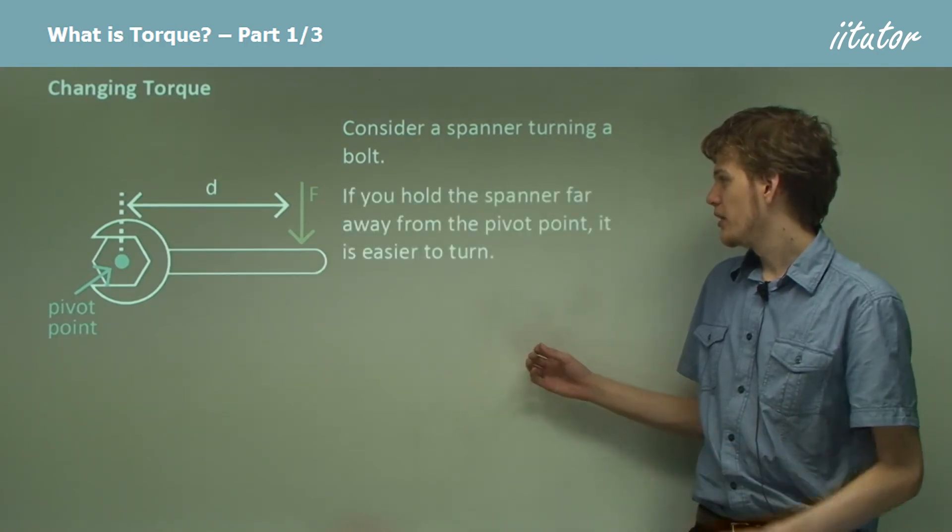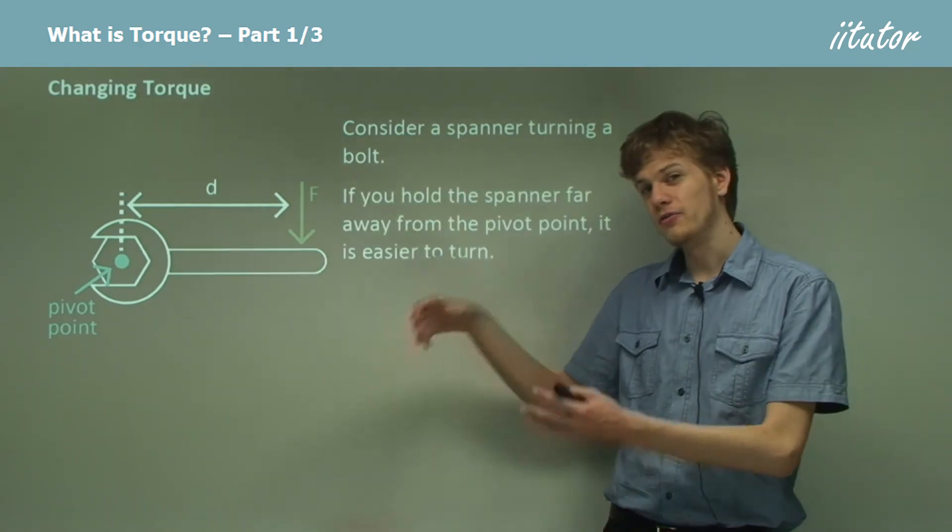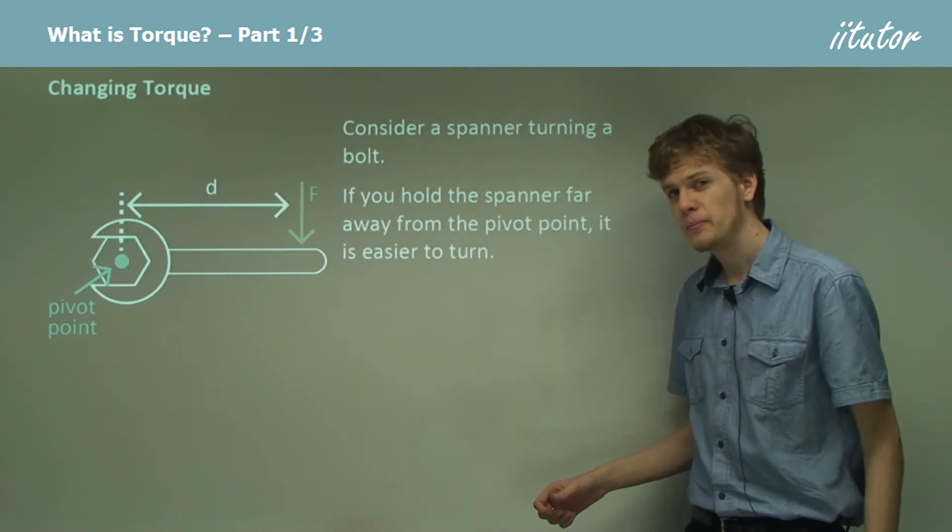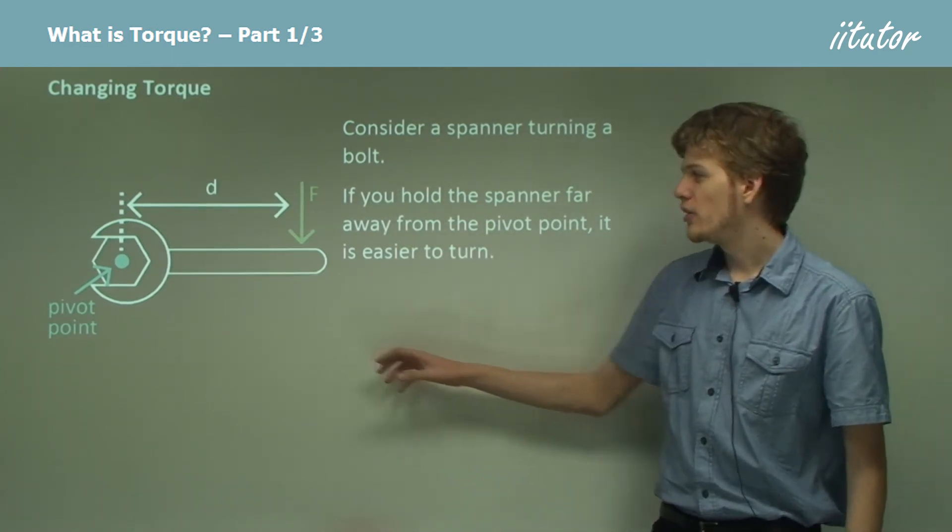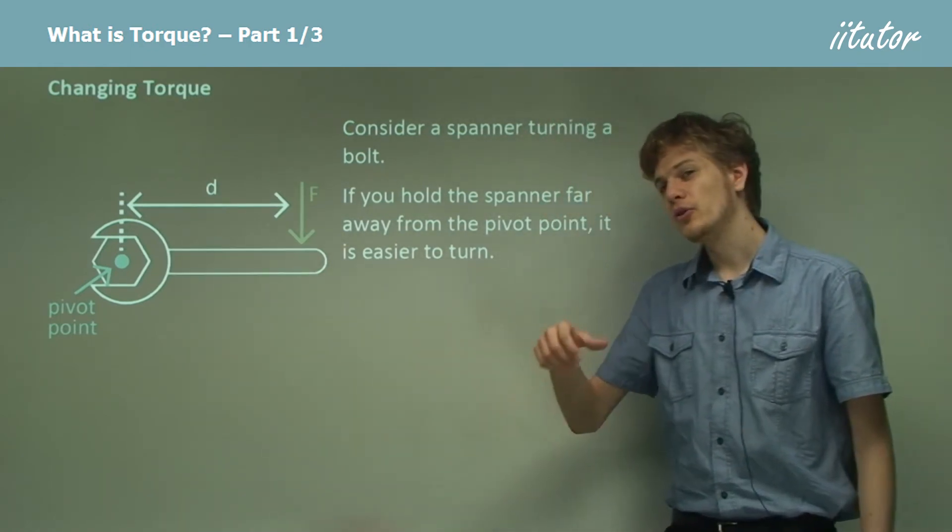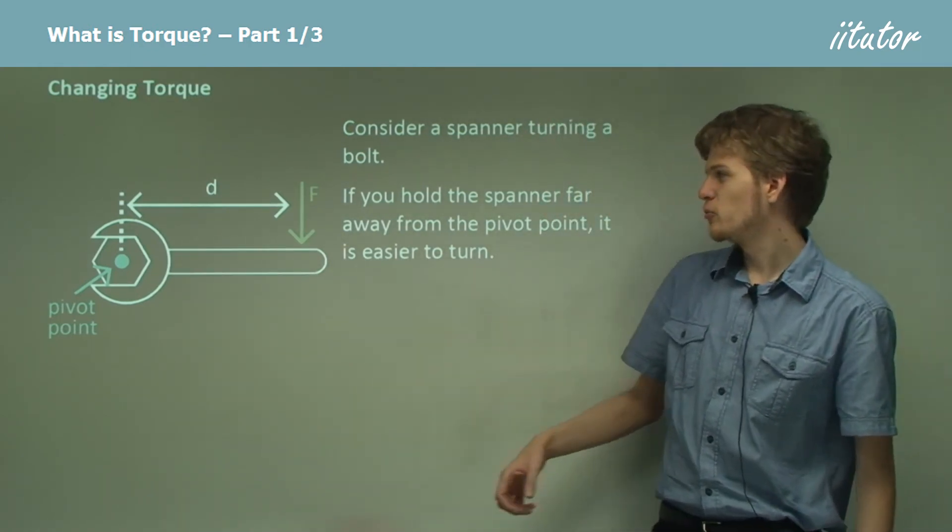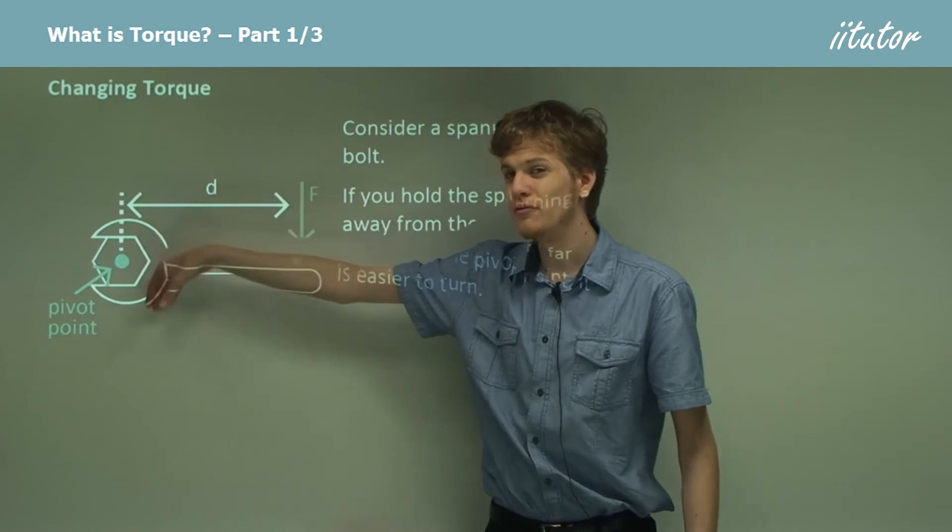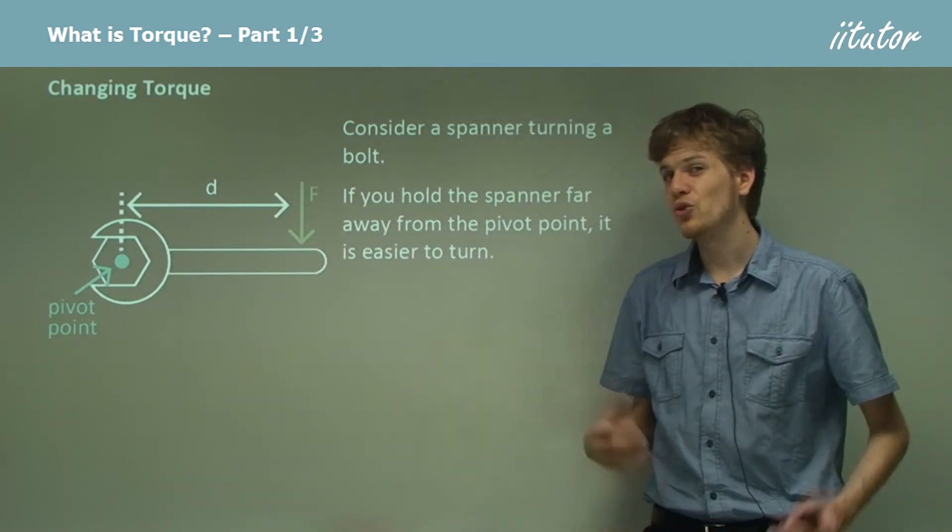We can see that if we hold a spanner very far from the pivot point it's quite easy to turn the spanner. But if we hold the spanner very close to the pivot point it'll be almost impossible, especially if we're applying the force right on top of the pivot point. That's not going to cause turning.